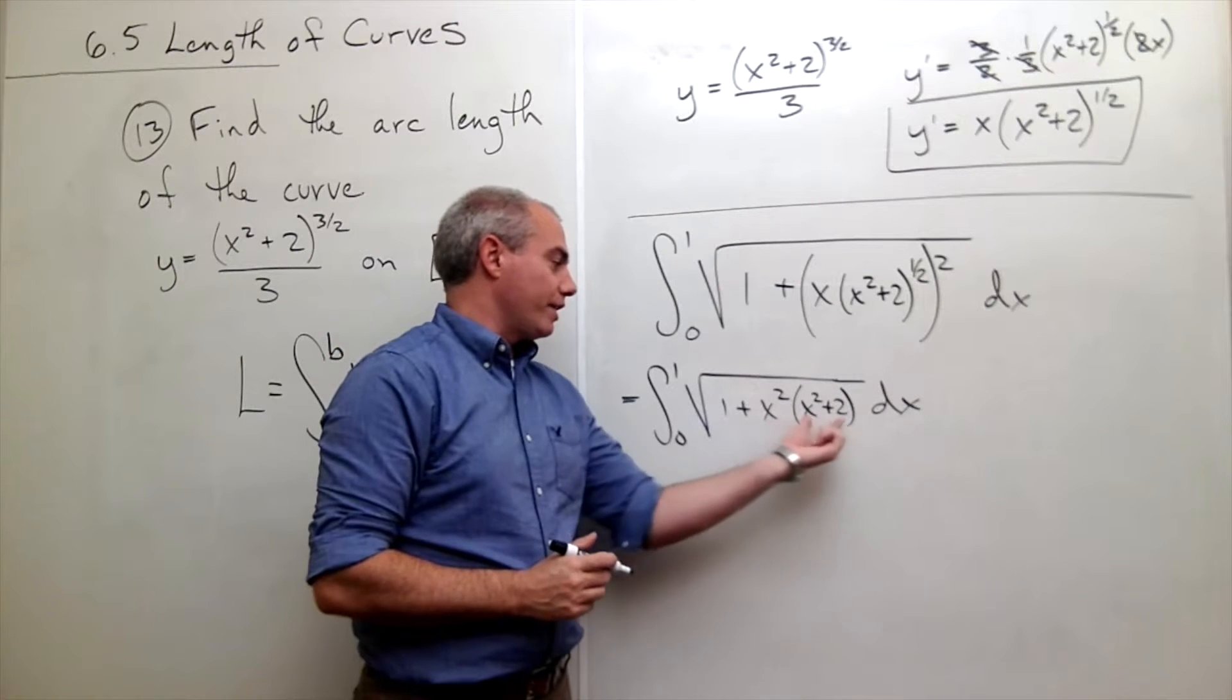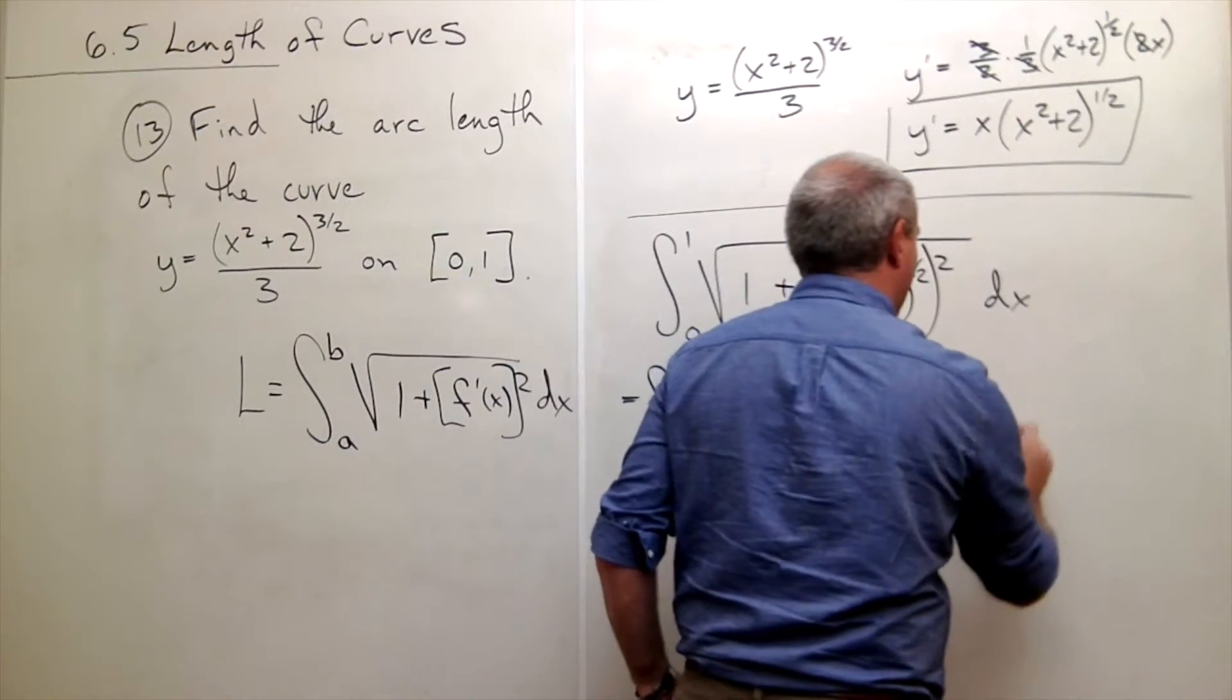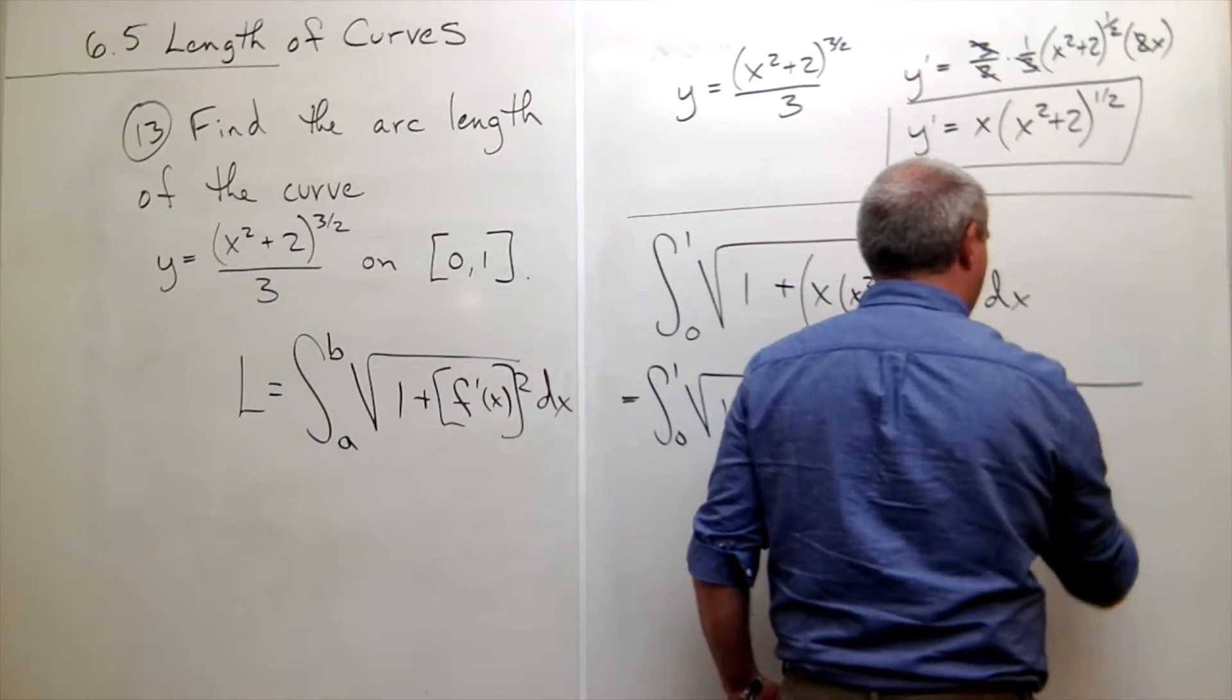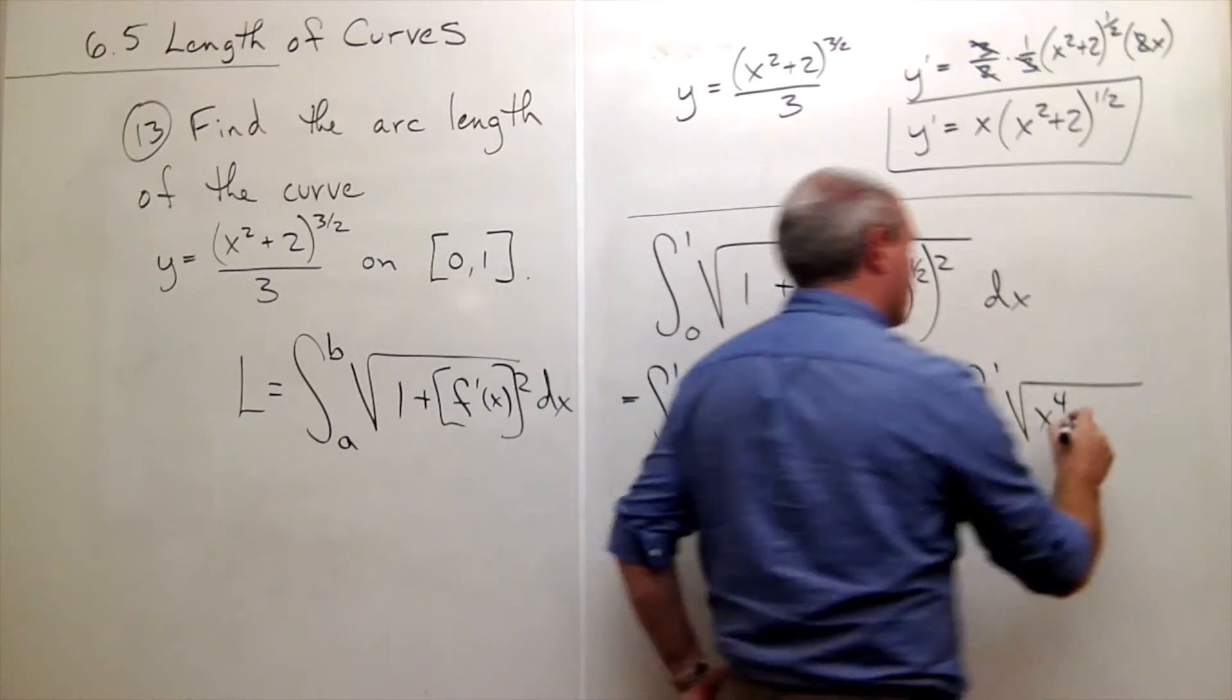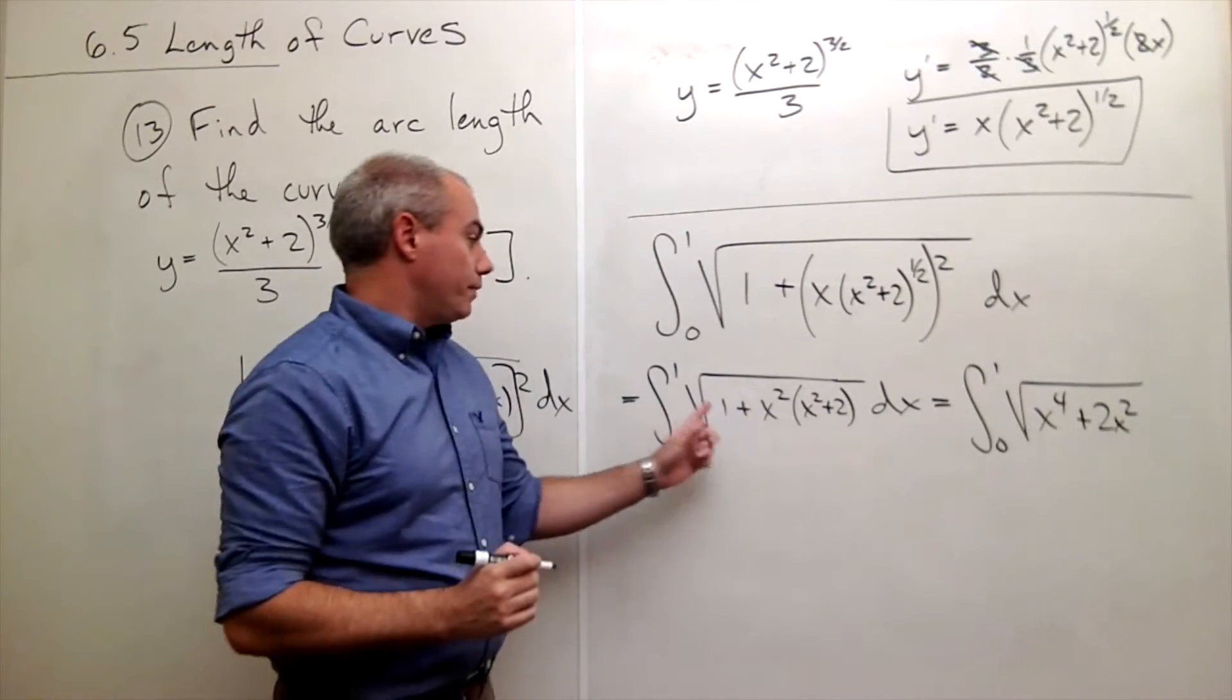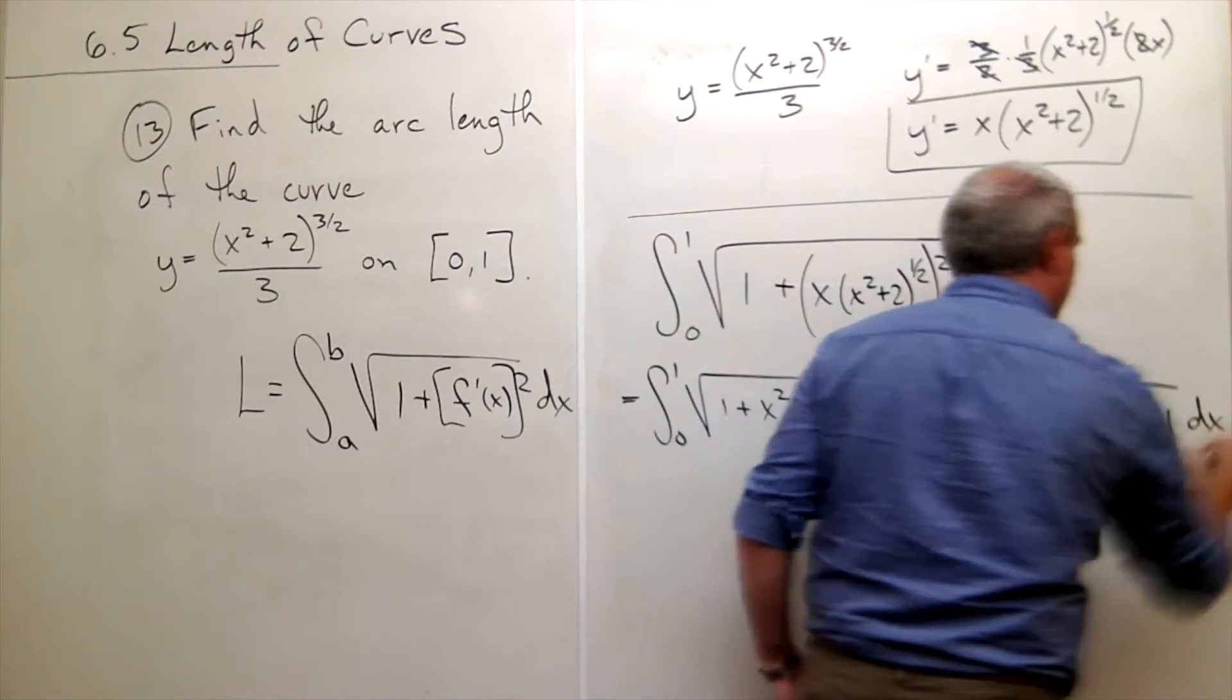But to multiply that out, I'll multiply everything inside these parentheses by an x squared to give me integral from 0 to 1 of the square root of x to the 4th plus 2x squared plus 1 dx.